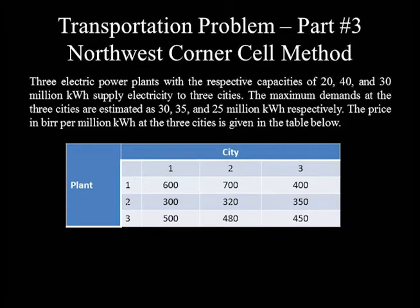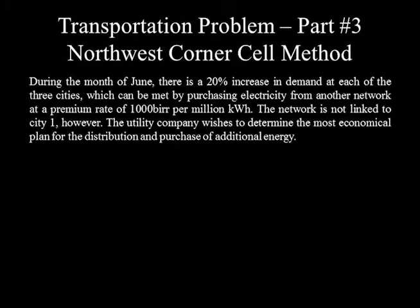This is the cost matrix for transmission of power from three plants to three cities. During the month of June, there is a 20% increase in demand at each of the three cities, which can be met by purchasing electricity from another network at a premium rate of 1,000 per million kWh. The external network is not linked to City One. The utility company wishes to determine the most economic plan for distribution and purchase of additional energy.